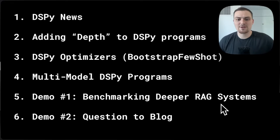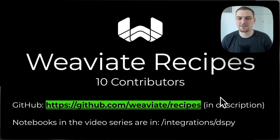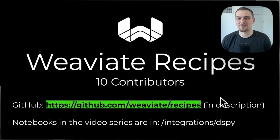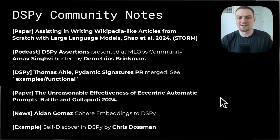We have two Jupyter notebook demos — first benchmarking some deeper RAG system designs, and then looking at a four-layer program to convert questions into blog posts. The notebooks used in this DSPy tutorial series can be found on Weaviate Recipes, a group effort with 10 contributors. If you'd like to contribute an example using Weaviate and DSPy, feel free to open a pull request. Let's kick things off with some DSPy community notes.